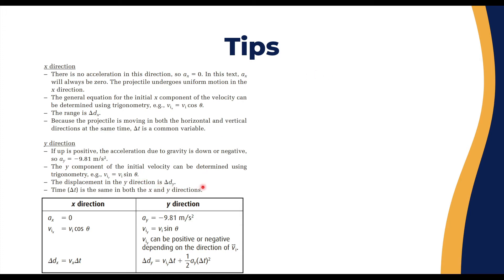As a little table: in the x-direction, a_x is 0, v_ix equals v_i cos θ, and Δd_x equals v_x multiplied by Δt—it's not v, it's v_x. In the y-direction, a_y is -9.81 m/s², v_iy equals v_i sin θ, which can be positive or negative depending on direction, and Δd_y is represented by this equation: v_iy multiplied by Δt plus 1/2 a_y multiplied by Δt². Don't be scared—it's simple. You have v_initial, you have Δt, and you have a_y, which in many cases is given in the problem.